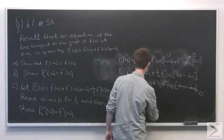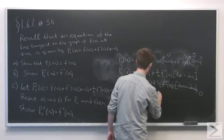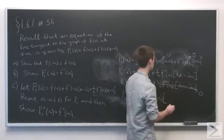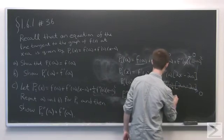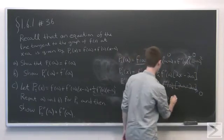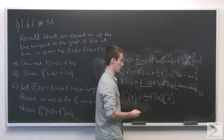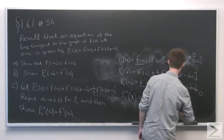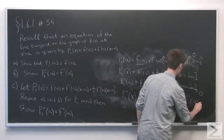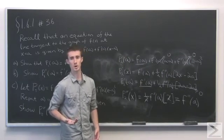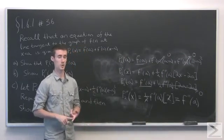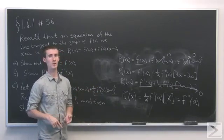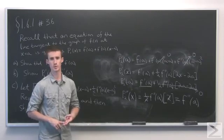That will be zero. That will leave us with (1/2)f''(a) times the derivative of this part here, which will just be 2 minus 0, or just 2. The 2s cancel out. So in the end, that leaves us with f''(a). And we see that indeed this is a better approximation in the sense that the function and the approximation p2 agree at the point a, the first derivative agrees at a, and also the second derivative agrees at a.